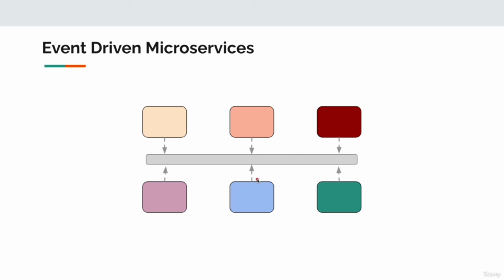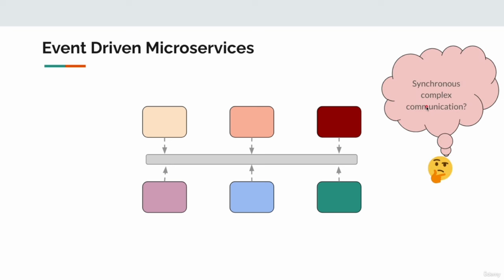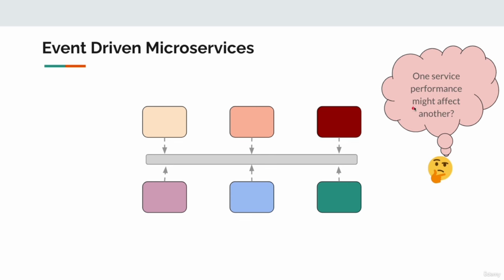Let's consider the same exact scenarios we just talked about and review. Our first concern was synchronous complex communication — here we do not have anything like that. Event-driven is all about asynchronous communication. We also said that one service's performance might affect another. Again, this is completely asynchronous, so if one service is slow it will not affect another service's performance because there is no direct connection between the two.